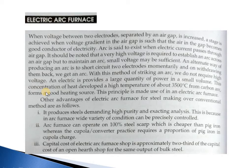It should be noted that very high voltage is required to establish an arc across an air gap, but to maintain an arc, a small voltage may be sufficient. An alternate way of producing an arc is to short-circuit two electrodes momentarily and on separating them back we get an arc. With this method of striking an arc, we do not require high voltage. An arc provides a large quantity of power in a small volume; this concentration of heat develops a high temperature of 3500 degrees centigrade. So carbon arc forms a good heat source.